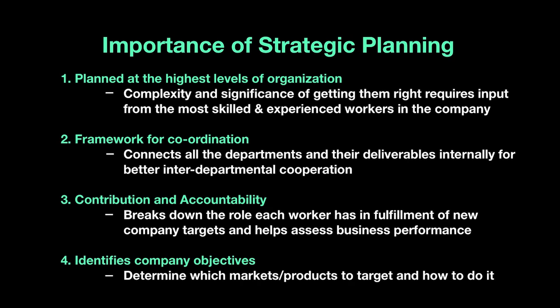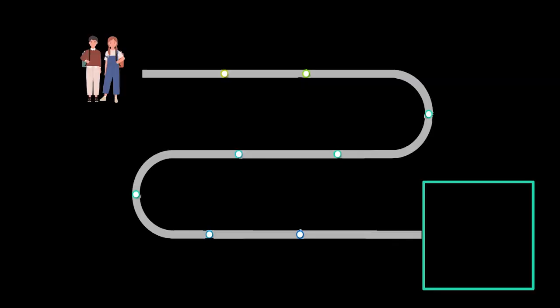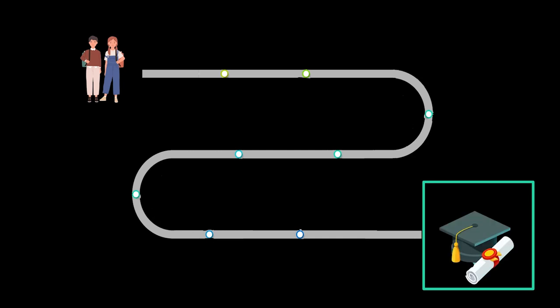Let me show you this process of strategic planning through an analogy that's easier to understand. Let's assume this represents you and your first day in school — the start of AS for you. The screen box represents your future. You're in school, you want to do something with your life, you want to achieve things. Perhaps one of your long-term goals is to go to university — that's what you're working towards. That's the strategy.